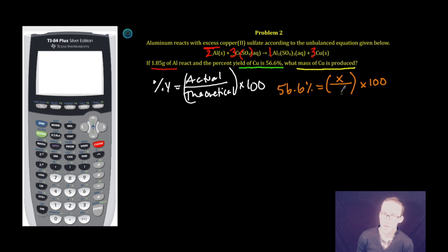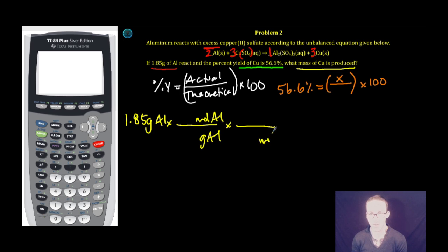Anytime we're asked to determine theoretical, we need to go to our stoichiometry. So if I start with 1.85 grams of aluminum, I'm going to do grams of aluminum on the bottom, so that cancels out, to moles of aluminum on the top. Then I'll put moles of aluminum on the bottom, because I want that to cancel out, and then moles of copper on the top. From moles of copper, I can go to grams of copper.